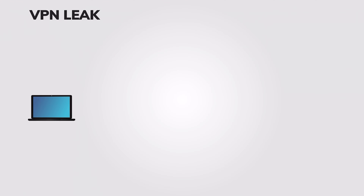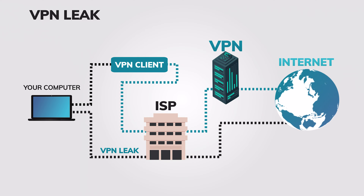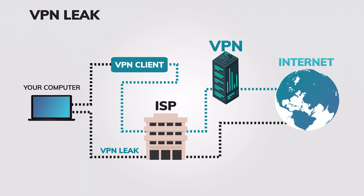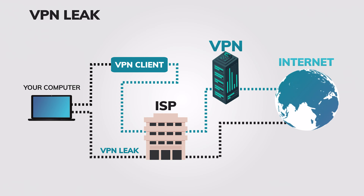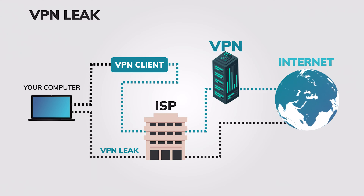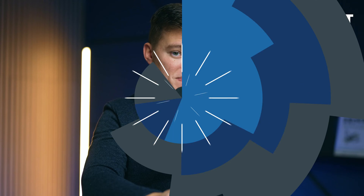Despite employing leading VPN solutions for privacy, your IP address and online activities might still be at risk, exposed through leaks originating not from your VPN itself, but from your browser or operating system. A VPN leak occurs when your actual IP address or DNS requests bypass the encrypted tunnel established by your VPN, thus revealing sensitive information to your ISP, advertisers, and potential attackers. Today let's find out how to detect leaks and, most importantly, how to fix them.